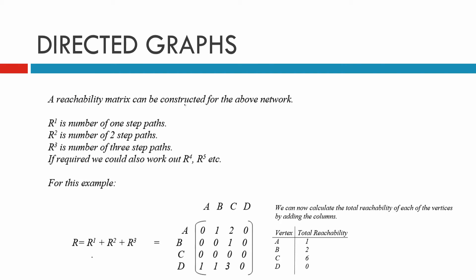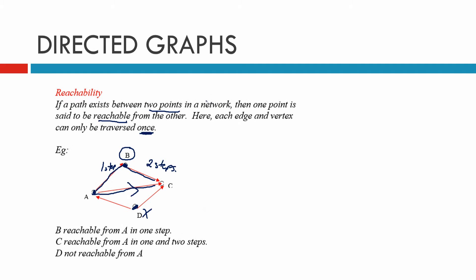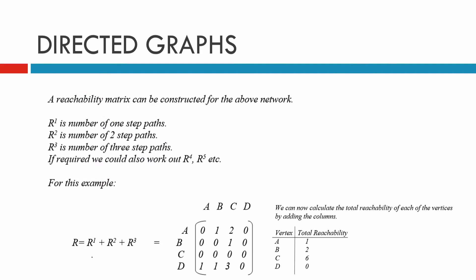A reachability matrix can be constructed for the above network. We can do one step, two steps, and so on. R1 is the number of one-step paths. R2 is the number of two-step paths. R3 is the number of three-step paths, and we can do R4, R5, etc. For this example, we get R1, R2, and R3 and add them all up, adding each cell to come up with a total reachability table.